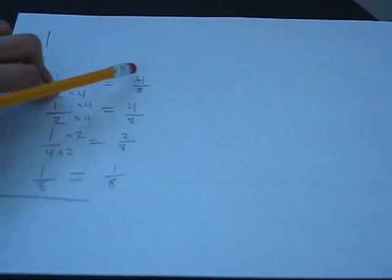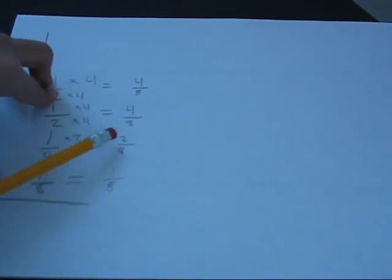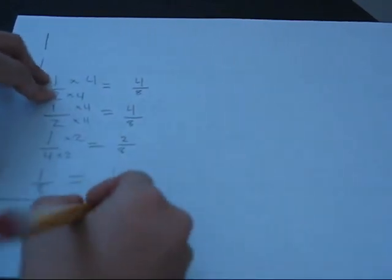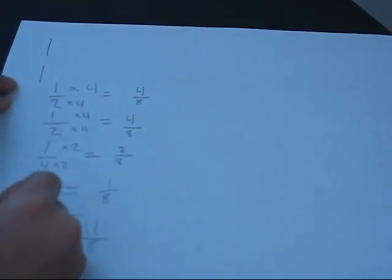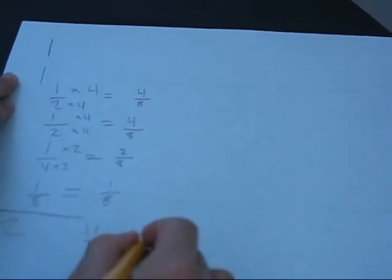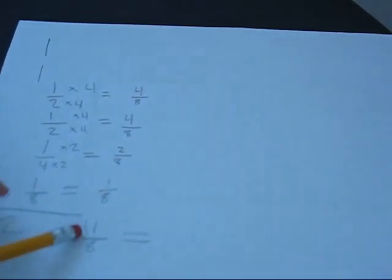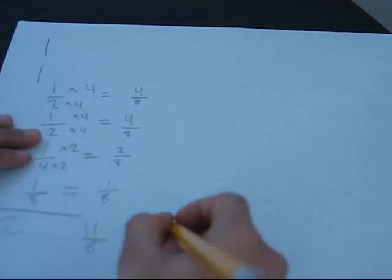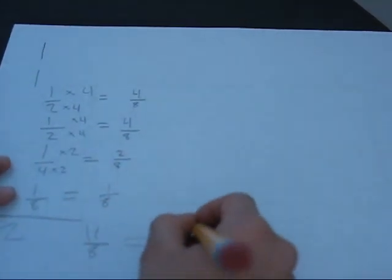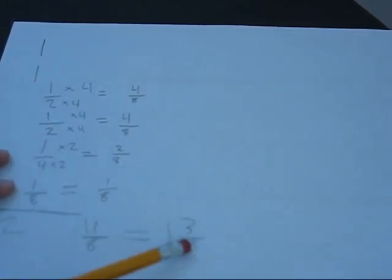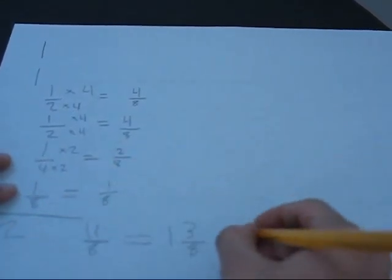Now we're going to add: 4 eighths plus 4 eighths plus 4 eighths plus 2 eighths plus 1 eighth. So 4 eighths plus 4 eighths is 8 eighths, plus 4 eighths is 10 eighths... wait, and then plus 1 eighth is 11 eighths. And then we do one plus one, which is two. Now we're going to simplify: 11 eighths gives us 1 whole with 3 eighths remaining — 11 minus 8 is 3 — so we have 1 and 3 eighths, plus the 2, which equals 3 and 3 eighths.